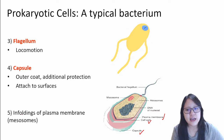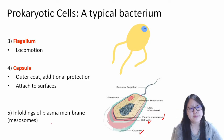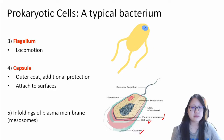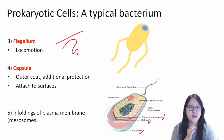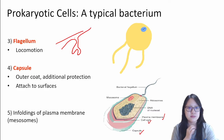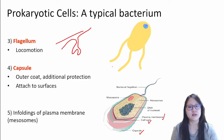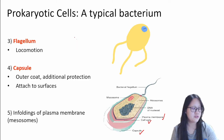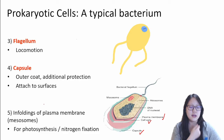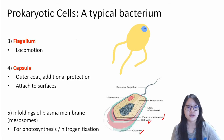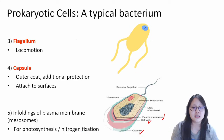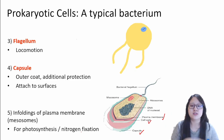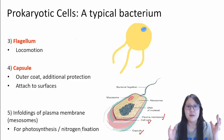Number five: infoldings of the plasma membrane, or mesosomes. The plasma membrane folds inward to form these structures. Mesosomes are usually in bacteria for photosynthesis or nitrogen fixation — in general, to make food. Why do they need it? They don't have any membrane-bound organelles — they don't have mitochondria, they don't have chloroplasts — therefore, they have this.